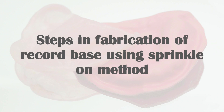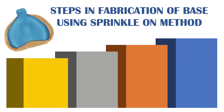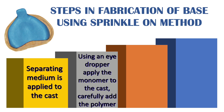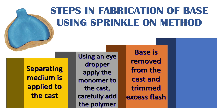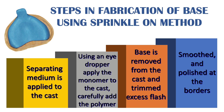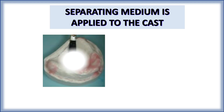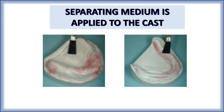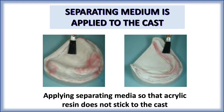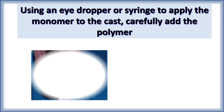Steps in fabrication using the sprinkle-on method: First, apply separating media to the cast — this is the most important step so that the acrylic resin does not stick to the cast. If you forget to apply separating media, the resin will stick, distort the cast, and be very difficult to remove. Next, using an eye dropper or syringe, apply the monomer to the cast and carefully add the polymer.